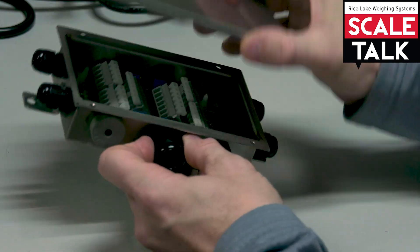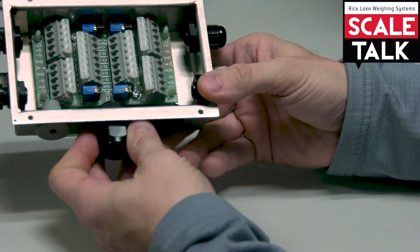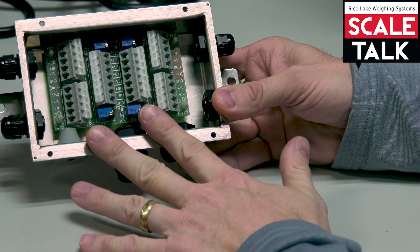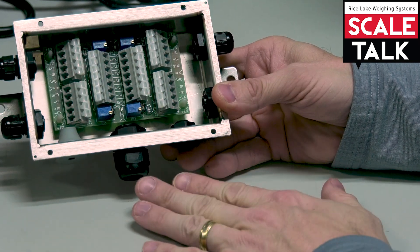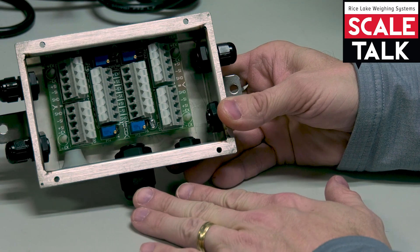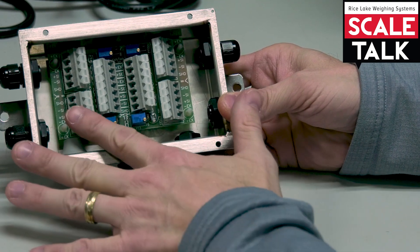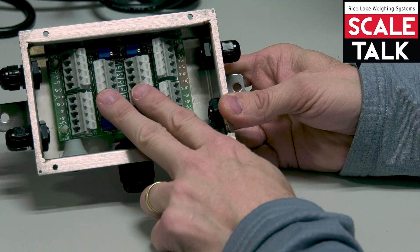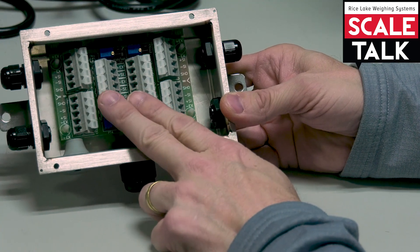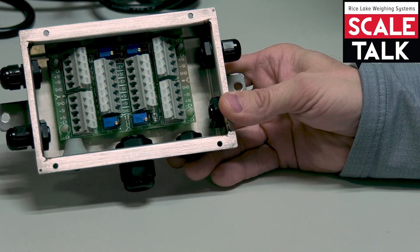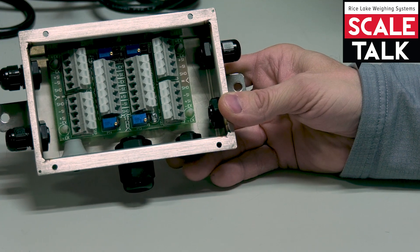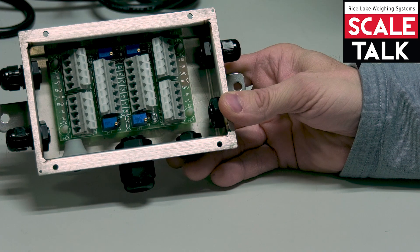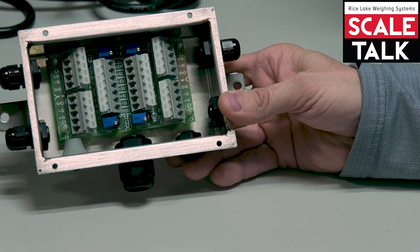And so in a J-Box, we have this capability. In this example here, this is a four-channel J-Box, so it allows me to bring up to four load cells in here. I've got four different channels, and then I've got two spots here in the middle. One of these is going to wire back to the indicator. We would call that our home run cable, and that's where the signal is going to come back to the indicator so it can be interpreted by the A to D and give us a weight.